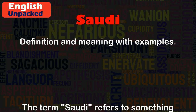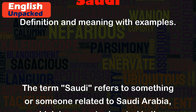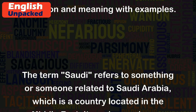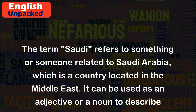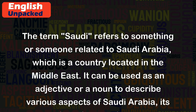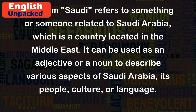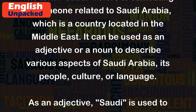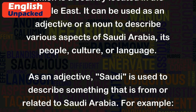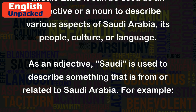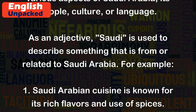The term 'Saudi' refers to something or someone related to Saudi Arabia, which is a country located in the Middle East. It can be used as an adjective or a noun to describe various aspects of Saudi Arabia, its people, culture, or language. As an adjective, Saudi is used to describe something that is from or related to Saudi Arabia.